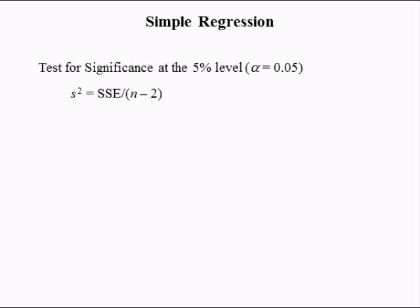The mean squared error, also known as S-squared in regression analysis, is equal to the sum of squared errors divided by its degrees of freedom, n minus 2. The sum of squared errors was equal to 7,758.48. The sample size is 100, and we subtract 2 to get our degrees of freedom. The mean squared error is equal to 79.17.